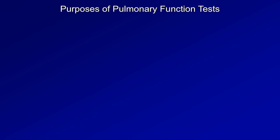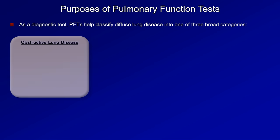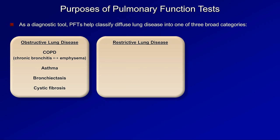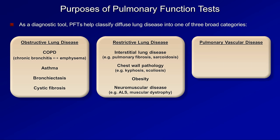Since diagnosis of symptomatic disease is why PFTs are usually ordered, that will be our subsequent focus. As a diagnostic tool, PFTs help classify diffuse lung disease into one of three broad categories. First is obstructive lung disease, which includes COPD — anything on the chronic bronchitis to emphysema spectrum — asthma, bronchiectasis, which is an irreversible dilation and destruction of the bronchial tree leading to chronic infections, and cystic fibrosis. The second category is restrictive lung disease, which includes interstitial lung disease, chest wall pathology, obesity, and neuromuscular disease. Finally, is pulmonary vascular disease, which includes primary pulmonary hypertension and chronic thromboembolic disease.